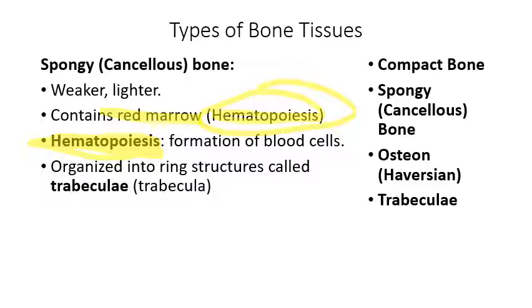The spongy cancellous bone is not organized into osteons but into slightly weaker structures called trabeculae — that's the plural. The singular word is trabecula.